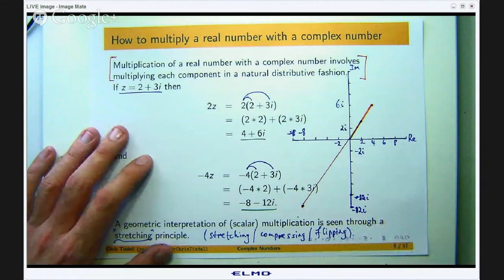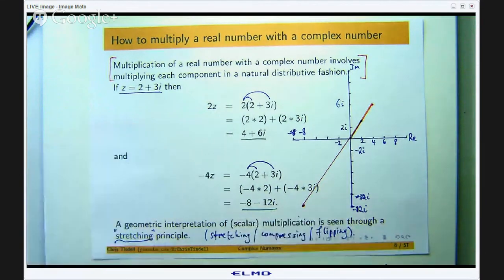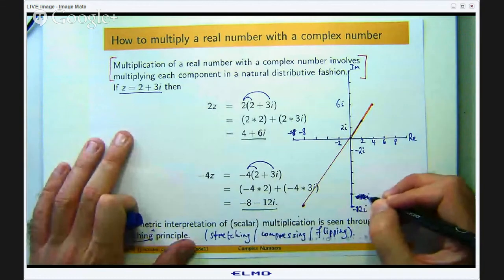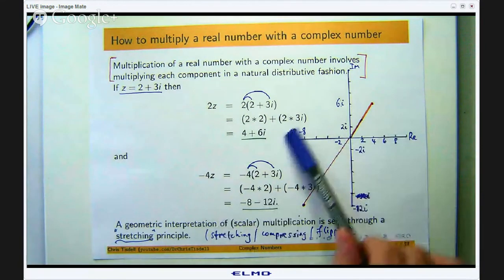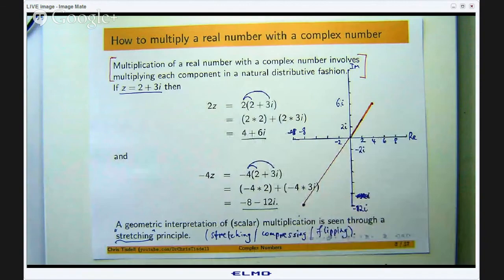Now we have some understanding of what it means to take a real number and multiply it with a complex number. We have some geometric understanding and we know how to do it algebraically. So that is my basic presentation on this scalar multiplication or multiplication of a real number with a complex number.